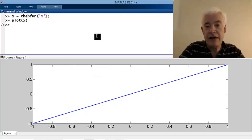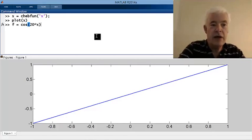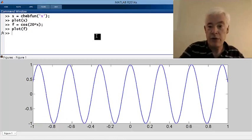Now that's not a very exciting function, so let's immediately make a more interesting function, cosine of 20x. If I plot that, you see what you expect to see.